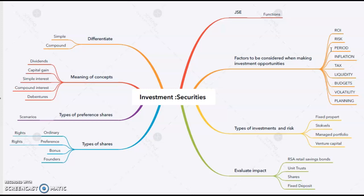We also have things like RSA retail savings bonds, unit trusts, shares, and fixed deposits — and you'll need to know what the risks are. On top of that, you need to evaluate the impact of these four types of investments, meaning what are the positives and what are the negatives. I would learn four positives and four negatives for each one.